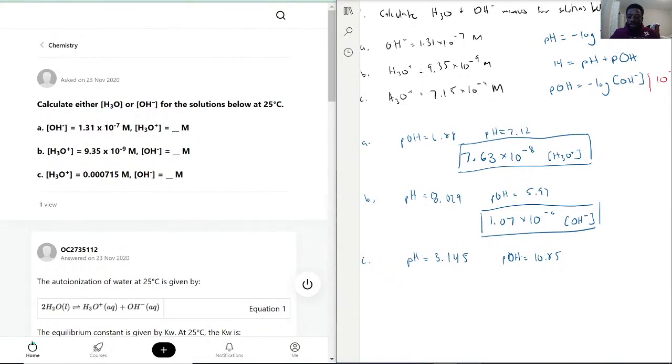We have 1.40 times 10 to the negative 11 for the concentration of OH-.